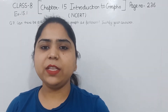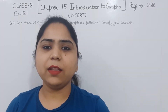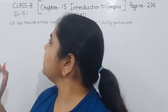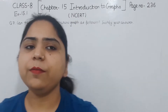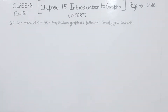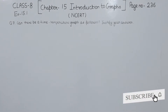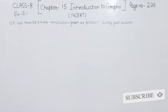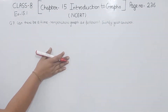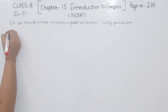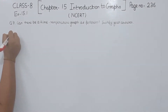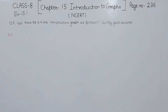Hello everyone, this is Preeti. We are here with question number 7 of exercise 15.1, page number 236. The question asks: can there be a time-temperature graph as follows? We are having 4 graphs as you can see, and we have to answer according to these 4 graphs.